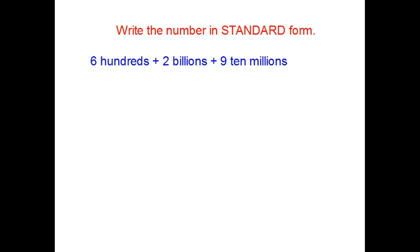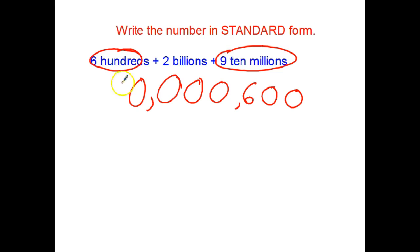Last one. You stop the video and try it out. Here we go. No ones. No tens. I do have some hundreds. Six of them. Thousands. None. Ten thousands. Hundred thousands. Millions. Ten millions. I do have nine. One hundred millions. Finally, billions. So, there's my answer. Two billion, ninety million, six hundred.